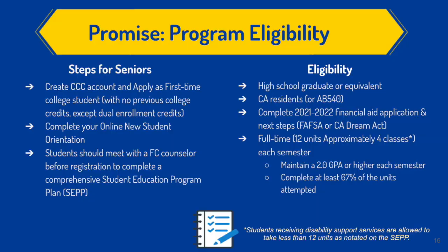Now let's talk about how you can be part of the Promise Program. For seniors, you must create a CCC account and apply as a first-time college student. You must complete your online new student orientation and meet with a Fullerton College counselor before registering to complete a comprehensive student education plan. Eligibility requirements include: you must be a high school graduate or equivalent, be a California resident or AB 540, complete the 2021-2022 financial aid application following the steps for FAFSA or the California Dream Act, be a full-time student at about 12 units each semester, maintain a 2.0 GPA or higher each semester, and complete at least 67% of the units to continue being part of the Promise Program.